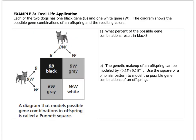Let's check out this real-life example that relates to genetics, which I think you learn about in science. Each of the two dogs has one black gene and one white gene. The diagram shows the possible gene combinations of an offspring and the resulting colors. So one way that you can determine possible genetic combinations for children or offspring is by using this thing called a Punnett square. And that's what this little description is all about.